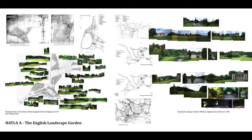William Kent is probably the most interesting figure of this period. Bridgman is underrated and not often talked about enough — he had a hand in many projects, and Kent actually took over many of Bridgman's projects. One of the most beautiful is Rousham.